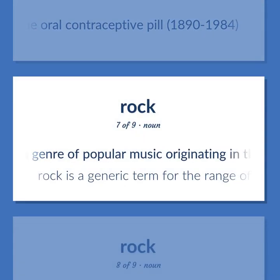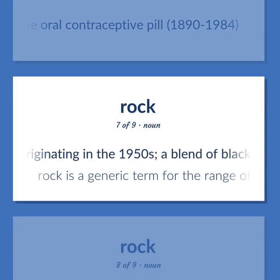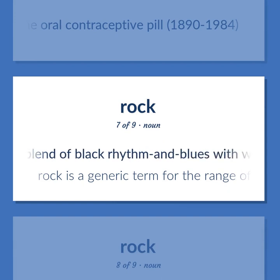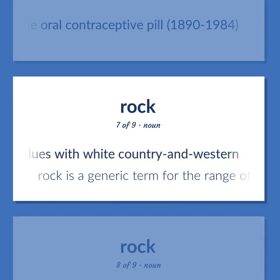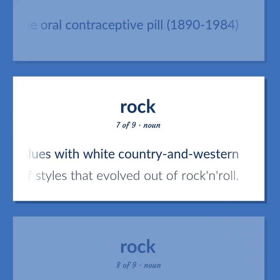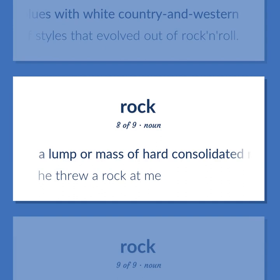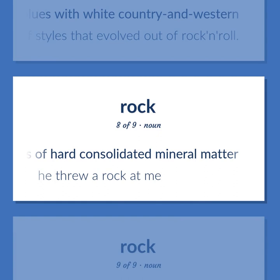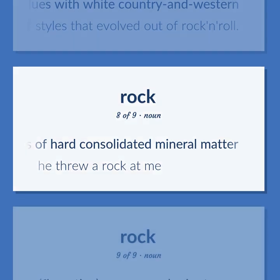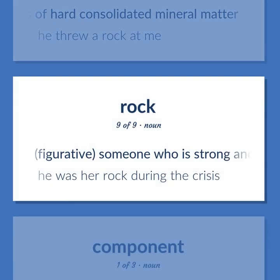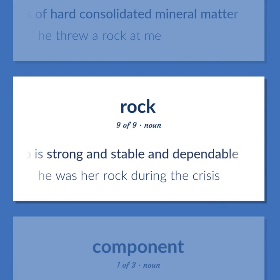A genre of popular music originating in the 1950s, a blend of black rhythm and blues with white country and western. Rock is a generic term for the range of styles that evolved out of rock and roll. A lump or mass of hard consolidated mineral matter — he threw a rock at me. Figurative: someone who is strong and stable and dependable — he was her rock during the crisis.